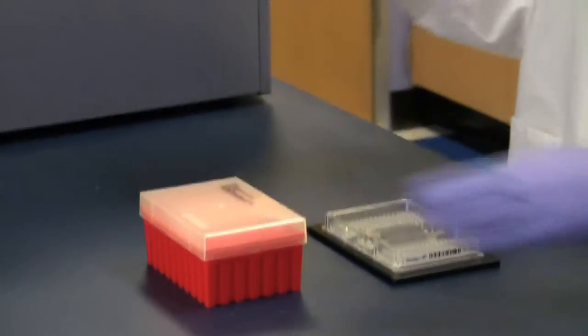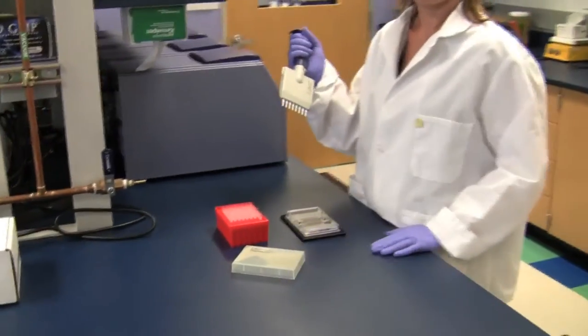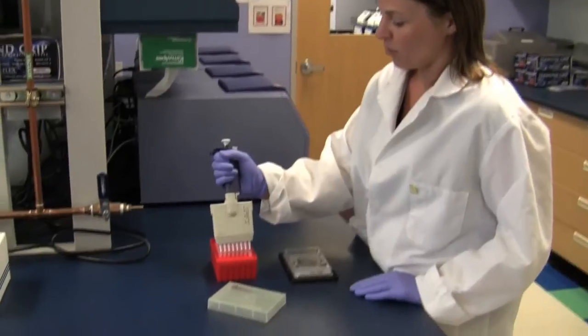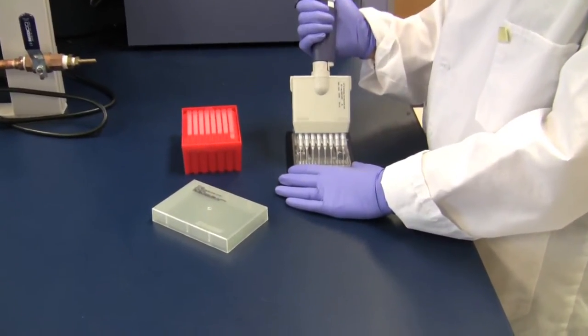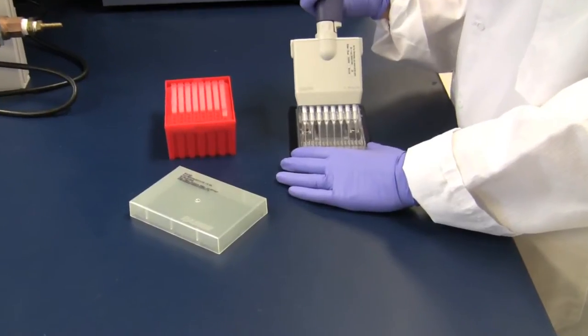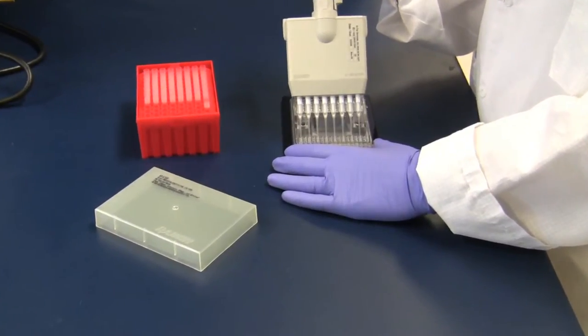Basically it's as simple as taking an 8-channel multipipetter and we're going to load our assays on the left-hand side of the chip in each one of the corresponding inlets. And there are 12 columns of inlets.